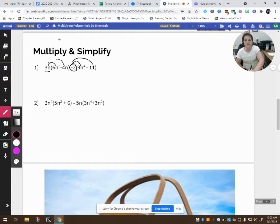So 3n times 6n cubed. Well, 3 times 6 is 18. n times n cubed is n to the fourth power. Now I've got 3 times negative 4, which makes it a negative 12. And n times n is n squared.